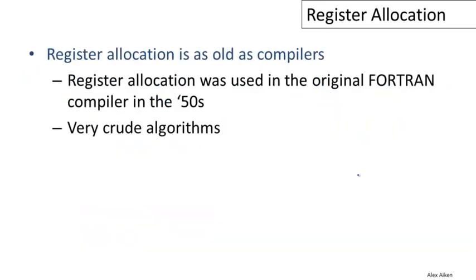Register allocation is an old problem. In fact, it was first recognized way back in the 1950s in the original Fortran project. But originally, register allocation was done with fairly crude algorithms.